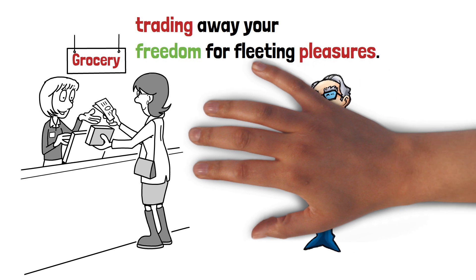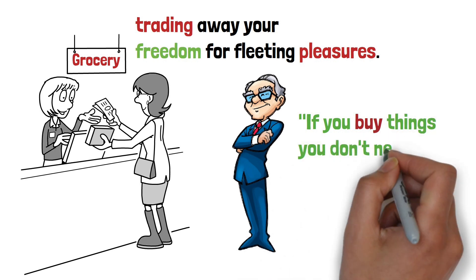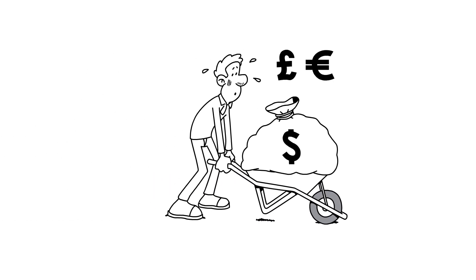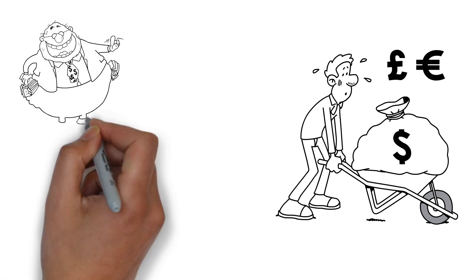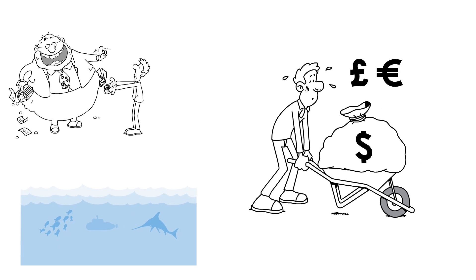Warren Buffett, the Oracle of Omaha, has long warned against the dangers of living beyond one's means. He famously said, if you buy things you don't need, soon you'll have to sell things you need. In other words, when you succumb to the allure of consumerism, you're putting yourself at the mercy of creditors. You become a slave to the whims of the market, forced to work tirelessly just to keep your head above water.